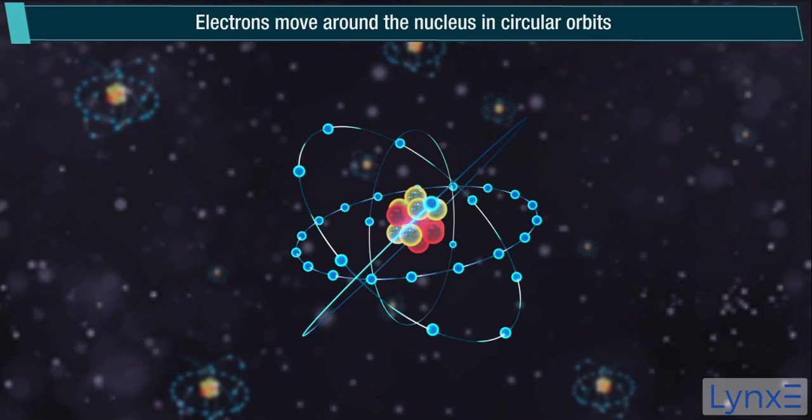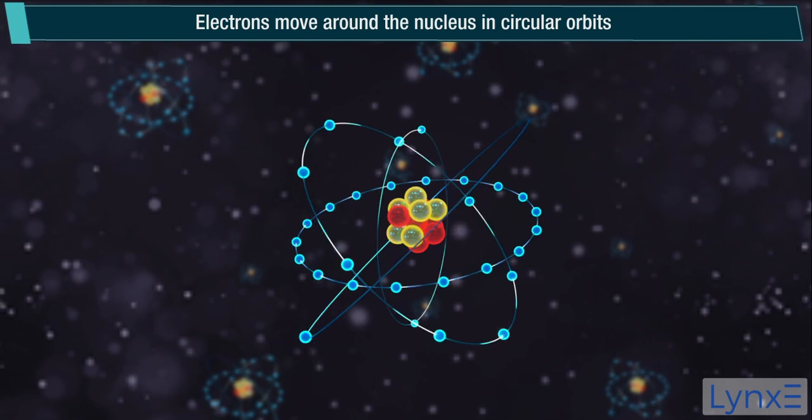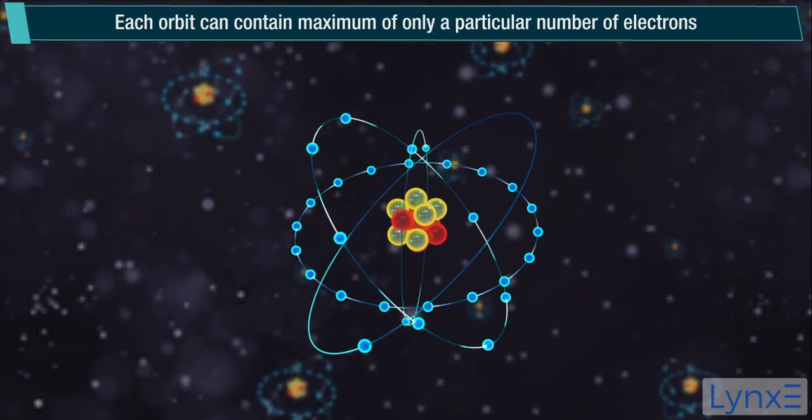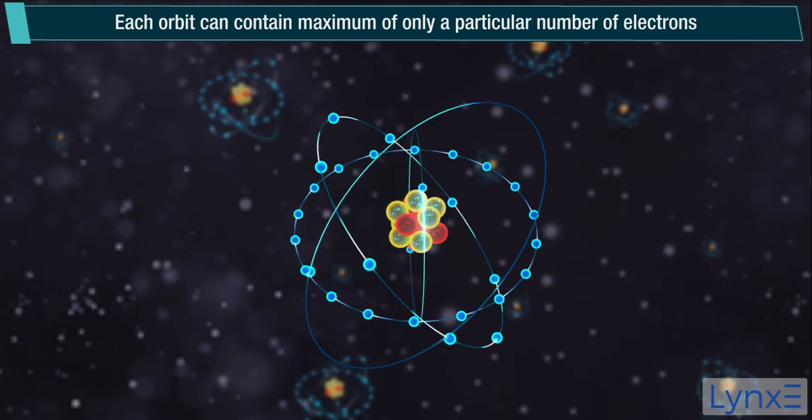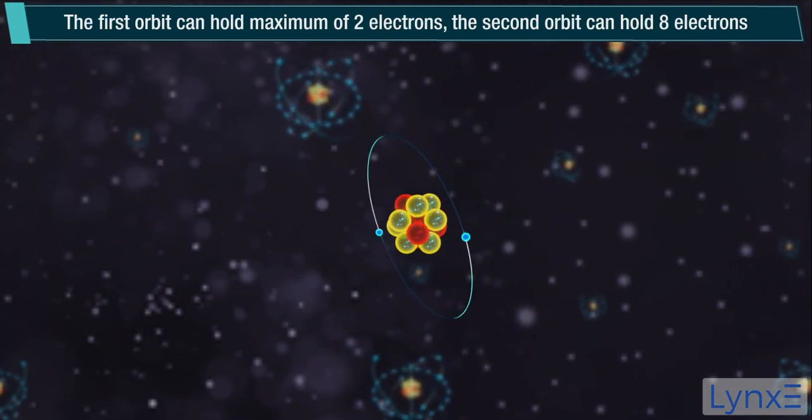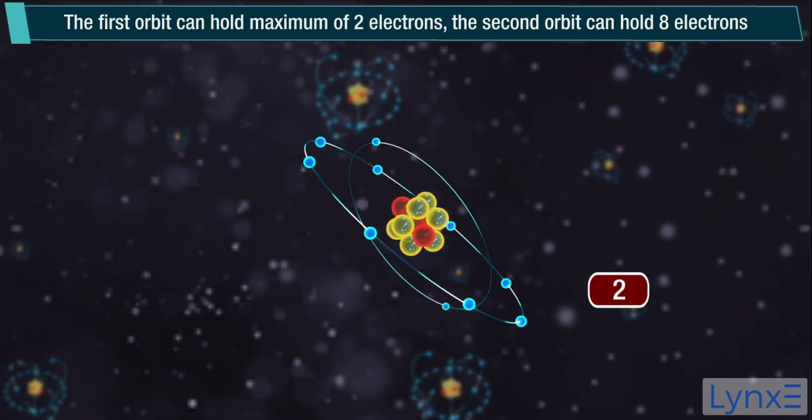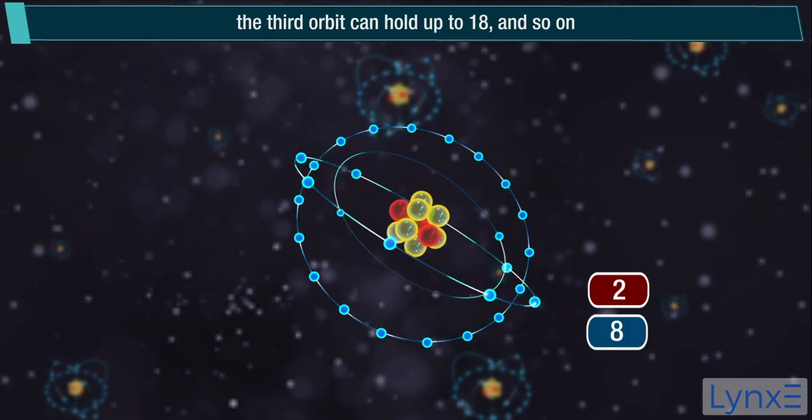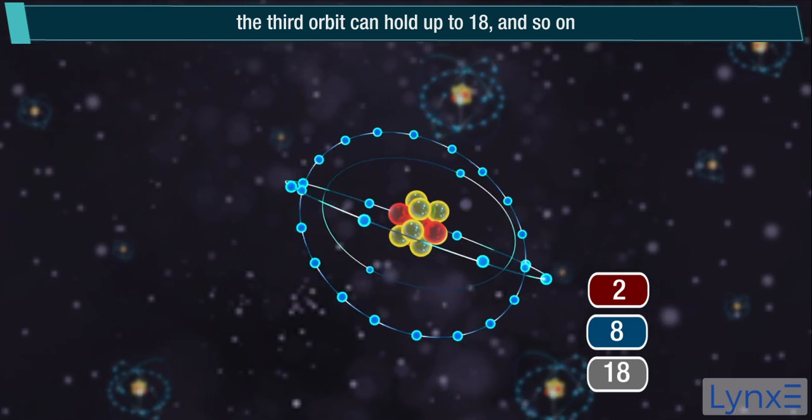Electrons move around the nucleus in circular orbits. Each orbit can contain maximum of only a particular number of electrons. The first orbit can hold maximum of 2 electrons, the second orbit can hold 8 electrons, the third orbit can hold up to 18, and so on.